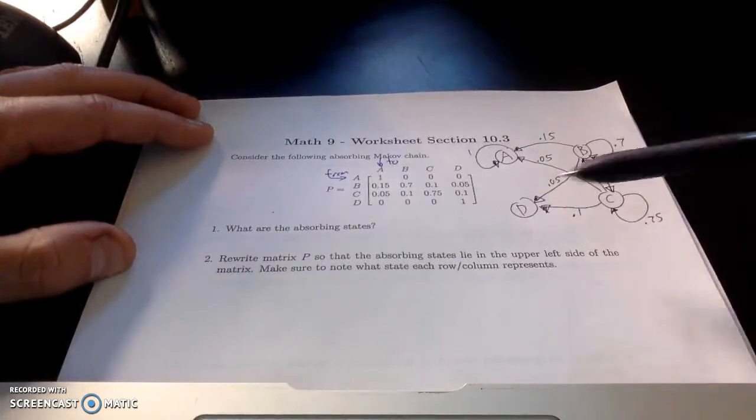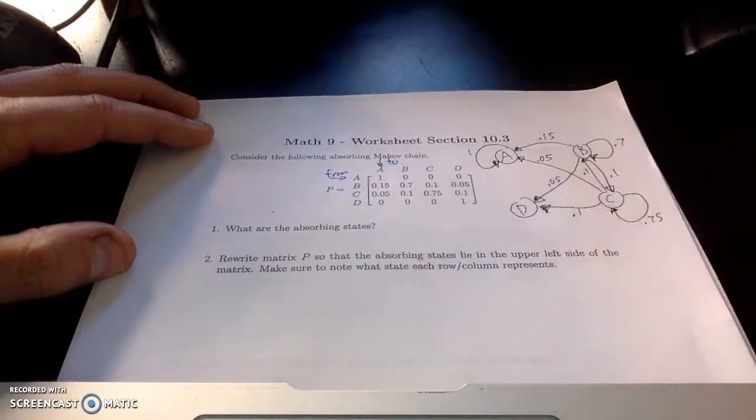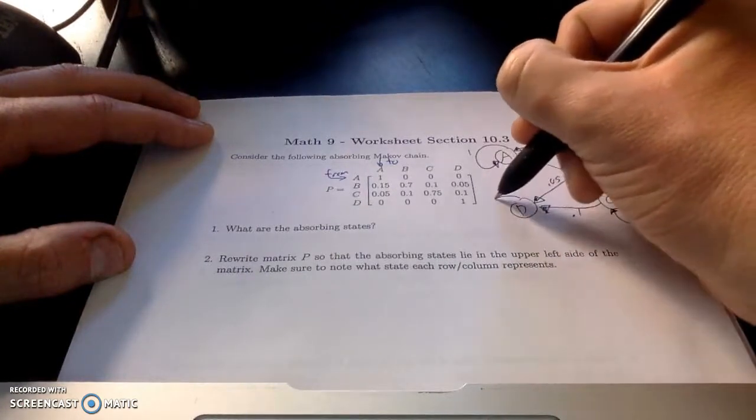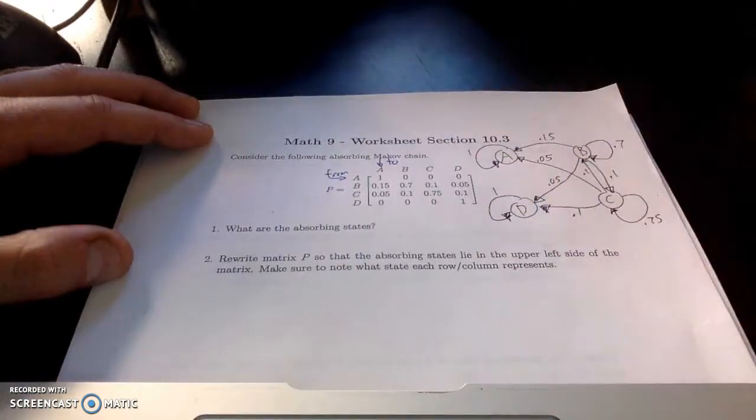And lastly, if we look at the bottom row, D does not go to A, B, or C. In fact, if you're in state D, you stay exactly in state D.